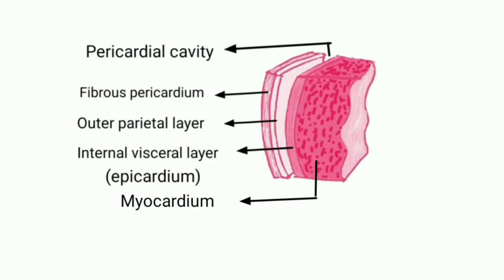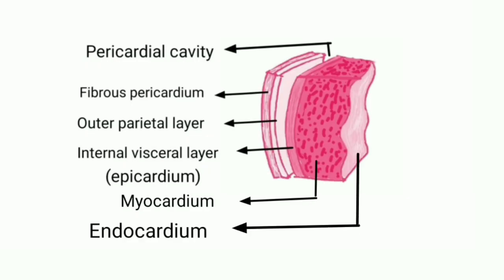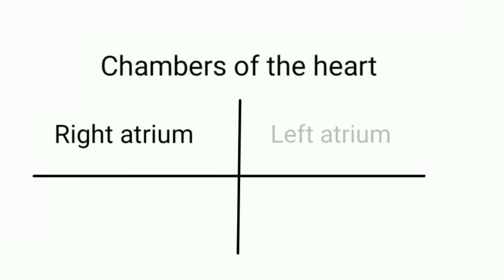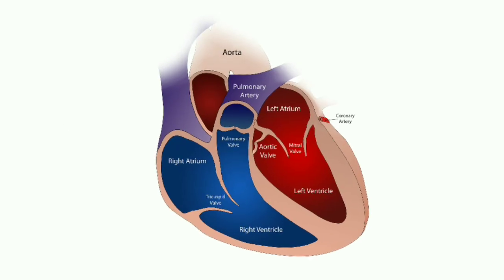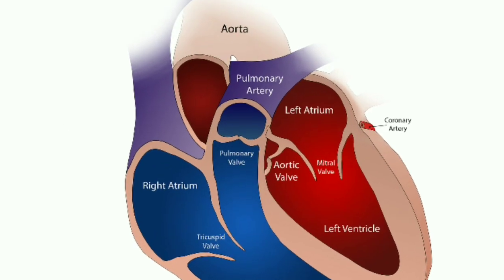Endocardium: the inner layer of the heart wall is the endocardium, composed of endothelial cells that provide a smooth, non-adherent surface for blood collection and pumping. It acts as a barrier between the blood and the heart muscle. Purkinje fibers are located in the inner ventricular walls of the heart, just beneath the endocardium, in a space called the sub-endocardium.